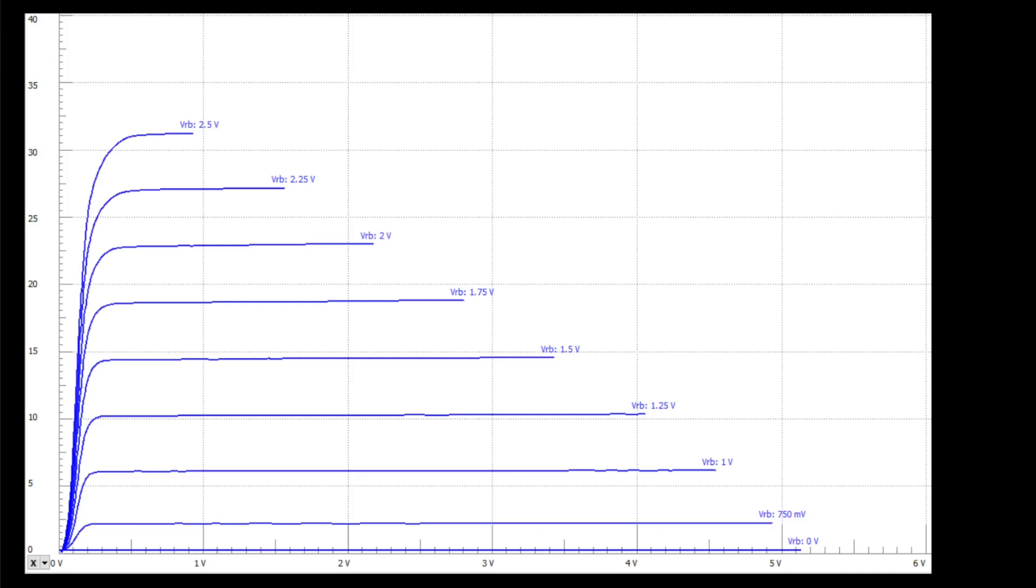In this video we will explore how to estimate transistor beta using curves derived from the analog discovery device made by Digilent. Please see the link below to see how the device was set up and how these curves were generated.